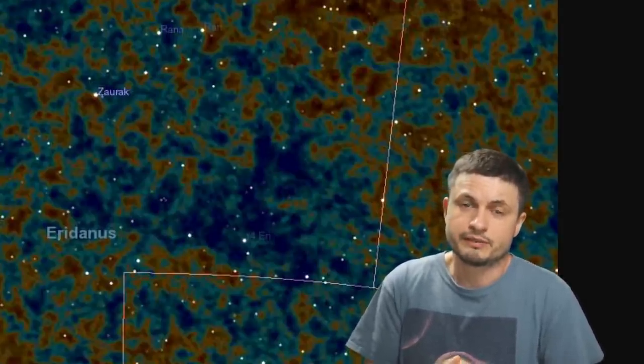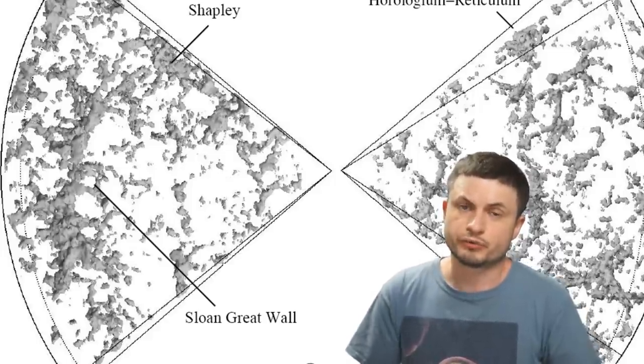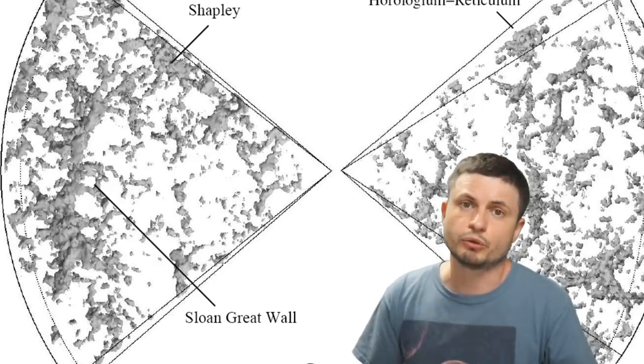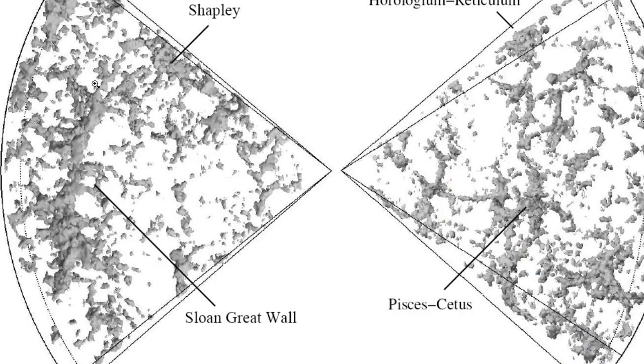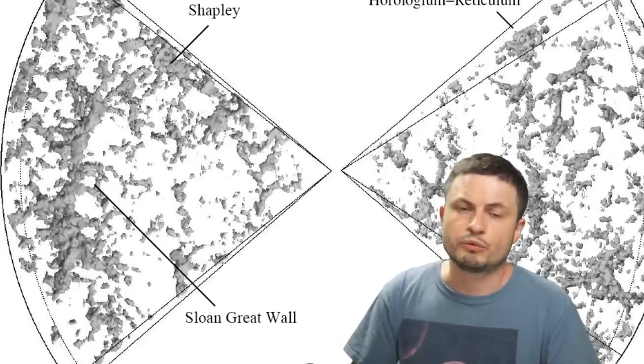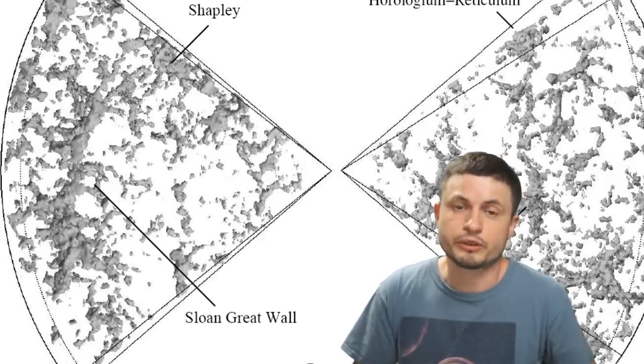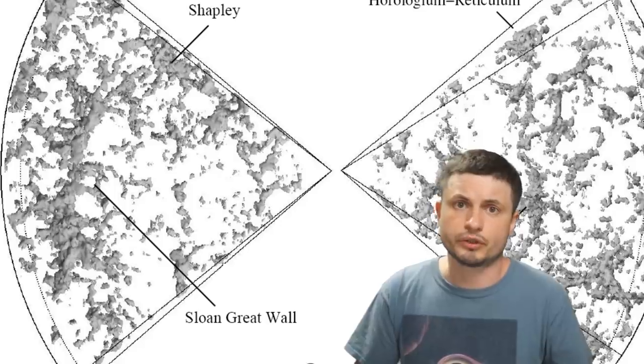But because it's a supervoid, it's more or less empty on the inside. But then there are actual structures as well. Like for example, this one right here known as the Sloan Great Wall. This is once again a gravitationally connected structure of various galaxies and various clusters. That's about 1.37 billion light years in length. And when it was originally discovered back in 2003, it did create a few problems and a few concerns for the modern models of the formation of the universe.